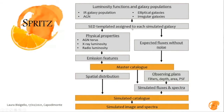We assign templates to the simulated galaxies based on their luminosity derived from the luminosity function, and from these templates we derive the expected fluxes in different filters without any noise, along with physical properties and emission features. This allows us to derive a master catalog — a catalog with no flux limit containing the average physical properties of the different galaxies. We can then use this catalog as a starting point, and considering the observing plans of the desired survey, we derive simulated fluxes and spectra with the expected noise, assign a spatial distribution, and produce the final simulated catalog and images.